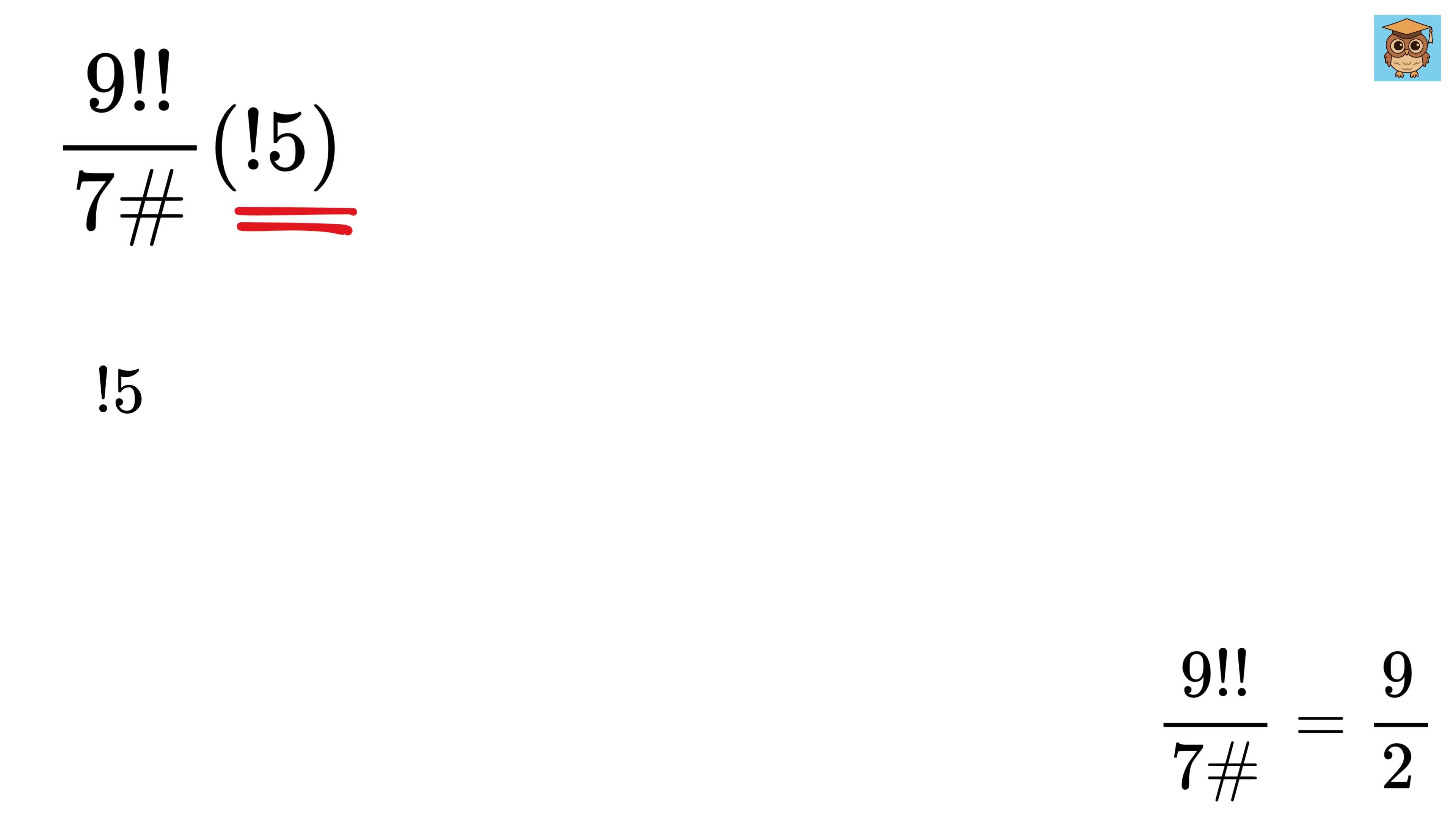To calculate 5 sub-factorial, we first calculate 1 over 0 factorial minus 1 over 1 factorial and so on till minus 1 over 5 factorial. Substitute factorial values to get this. Now, the sum of these fractions turns out to be 11 over 30. Now, multiply this with 5 factorial or 120 and we get 5 sub-factorial as 44.